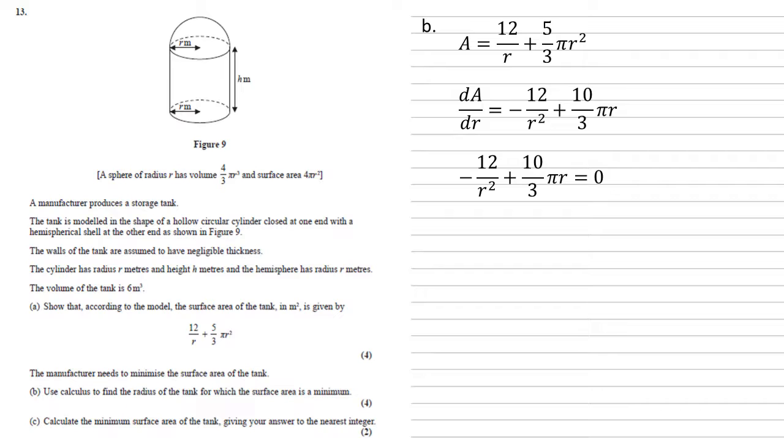We now set that equal to zero, because we're looking for the minimum. Adding 12 over r² to both sides gives us 10/3 πr equals 12 over r². Cross multiplying the 3 and the r² gives us 10πr³ equals 36. So, r³ equals 36 over 10π. Putting this into our calculator and cube rooting gives us an answer of r equals 1.05 meters to three significant figures.